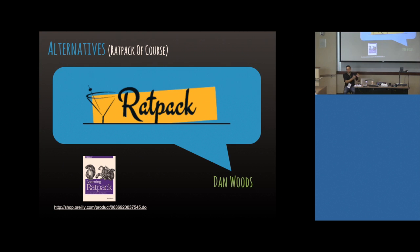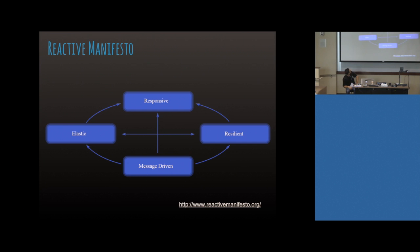Here's the Reactive Manifesto — that's the URL you can go to and read their ever-evolving manifesto. Essentially it says that every system should be responsive, resilient, message-driven, and elastic. Seems pretty simple, right? Sounds reasonable.